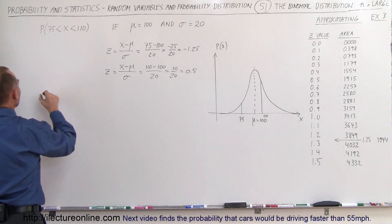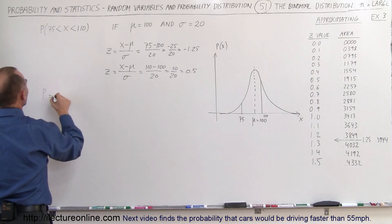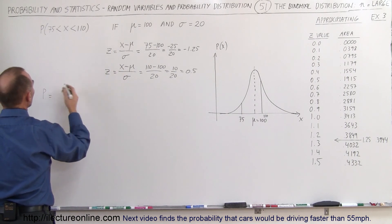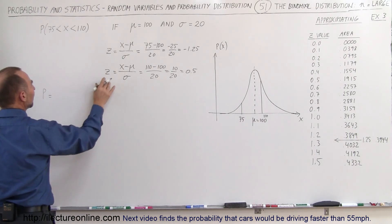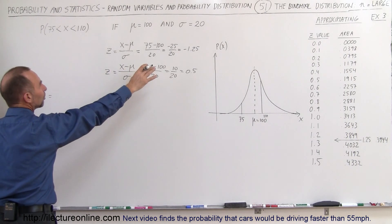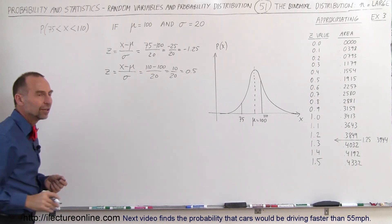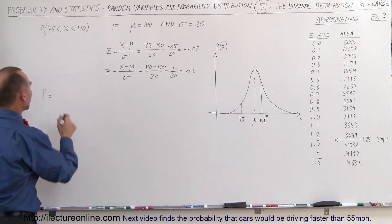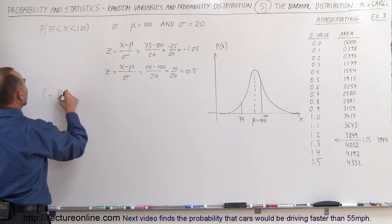So in this case, we can say that the probability is going to be equal to the area with the z value equal to 1.25 plus the area with the z value of 0.5.